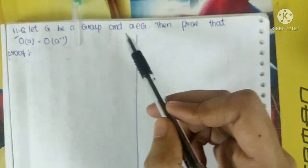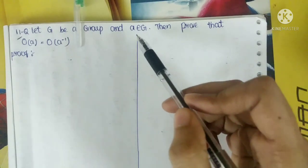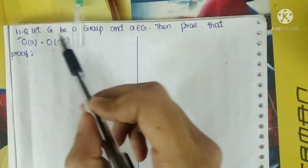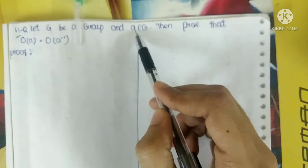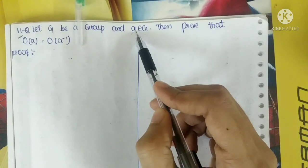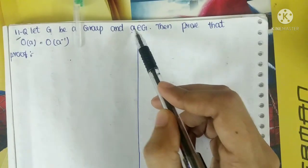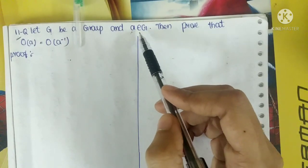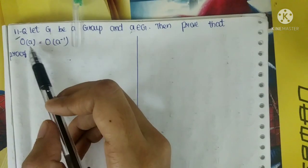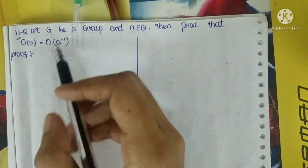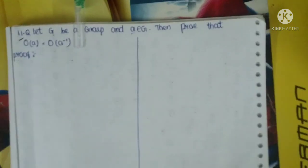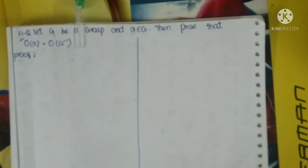Let G be a group and A belongs to G. So G is a group, and A is an element of G. Then prove that O(A) is equal to O(A⁻¹) — the order of A equals the order of A inverse — and we shall prove this.